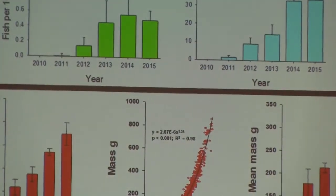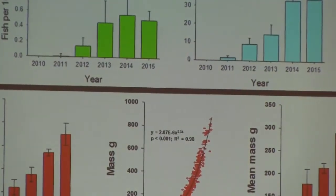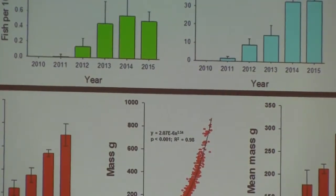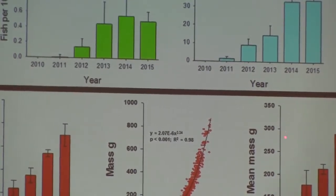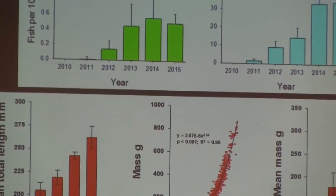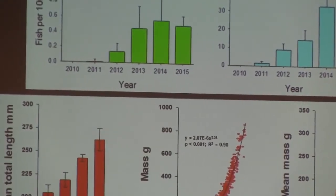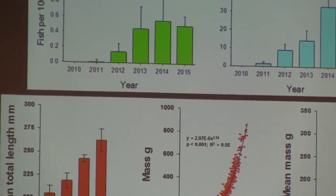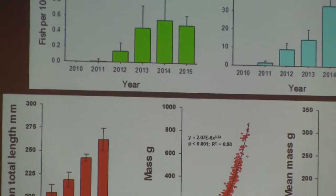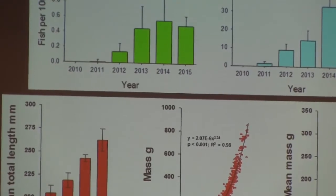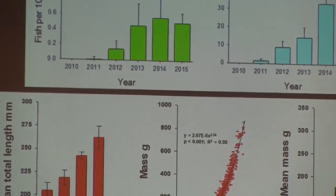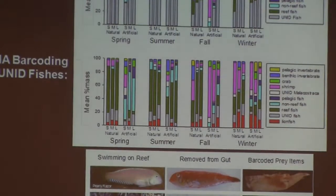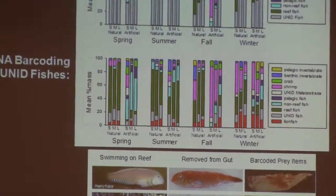This is just to show some of the data they've collected over the last five years. The density's at the top, but not only are they getting more abundant, they're getting larger too. The total length and mean weight — which means their consumption rates are also increasing, and their ability to consume larger native fish is also increasing.